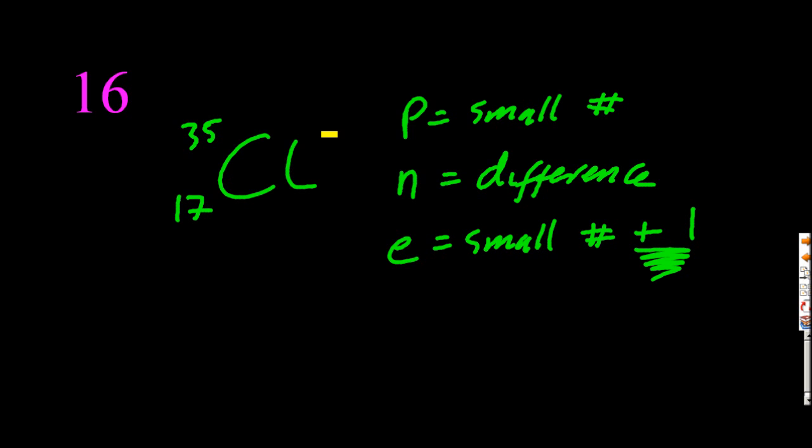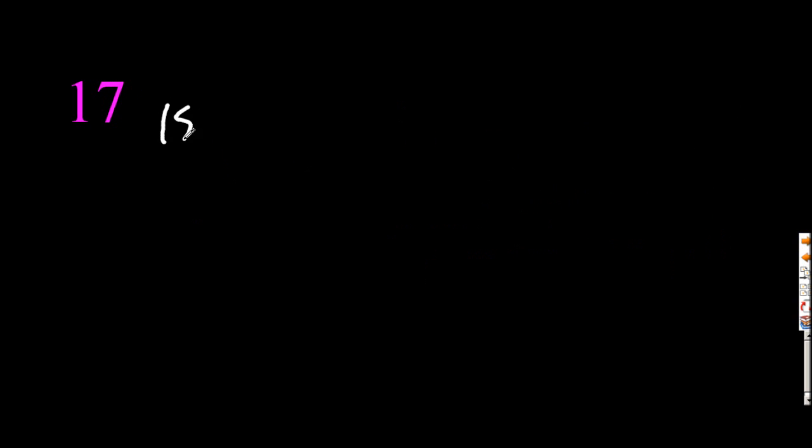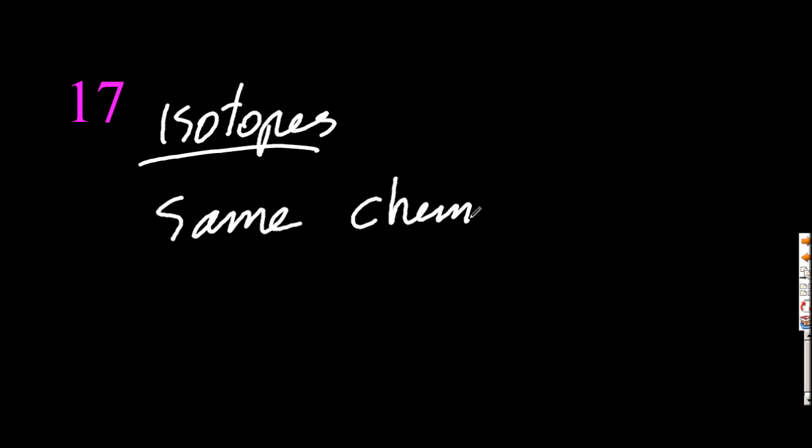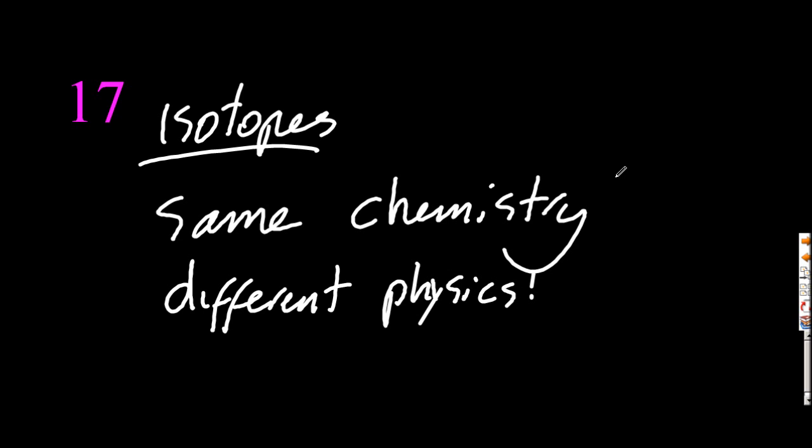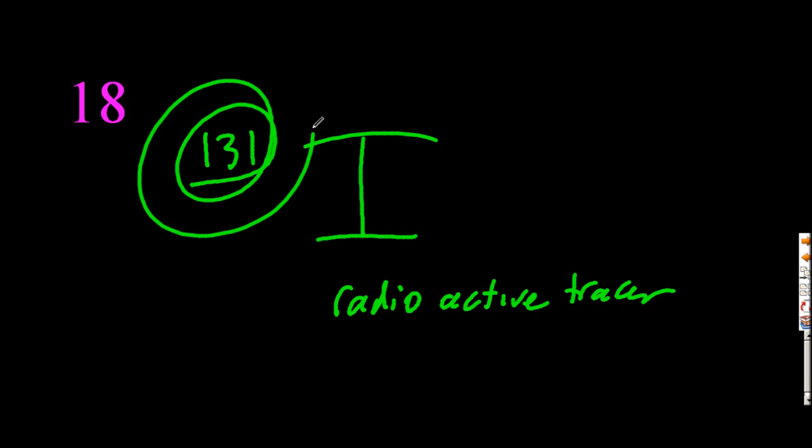Don't forget to add that extra electron. Isotopes have the same chemistry and different physics. So same chemistry means that they burn in the same way, give out the same energy, but the physics is different. Density, melting point, things like that. Iodine 131 is a radioactive tracer. You can't just say iodine. It has to be 131.